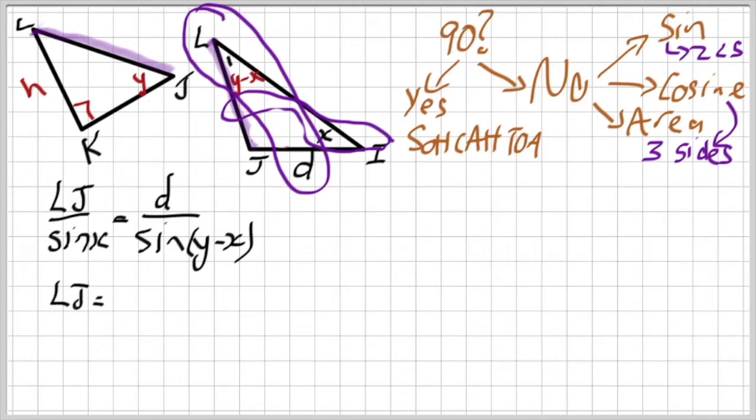So, I've got to try and get LJ alone. So, I'm multiplying that sine of x to the top, and now I've got an expression for that common side. From that common side, I'm now moving over to the other triangle. I'm moving to triangle KLJ.